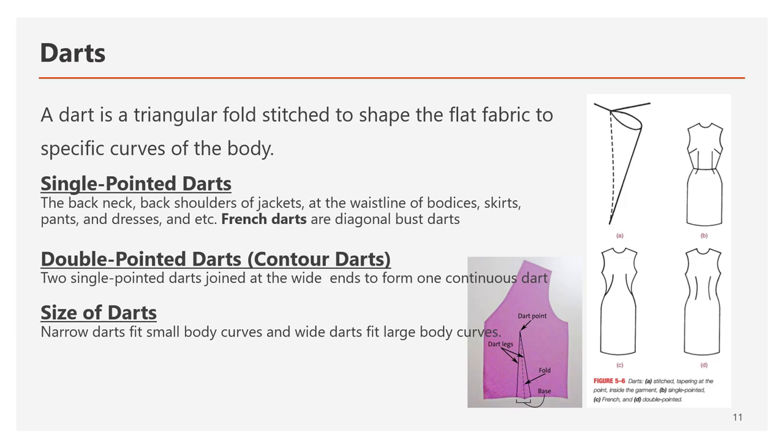When a single pointed dart is placed diagonally at the bust, it's called a French dart — you can see an example in figure 5.6c. The double pointed dart is two single pointed darts joined at the wide end to form one continuous dart, also called a contour dart. The curve differs based on dart size: a narrow dart fits smaller body curves, while a wider dart fits larger body curves.